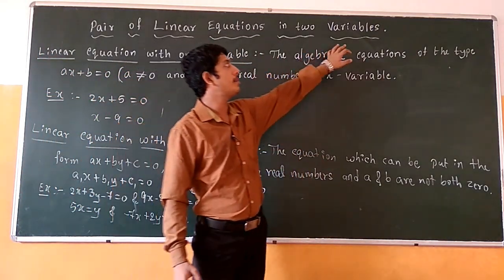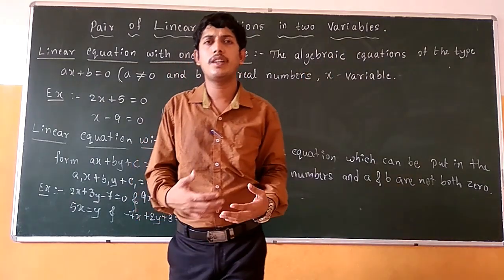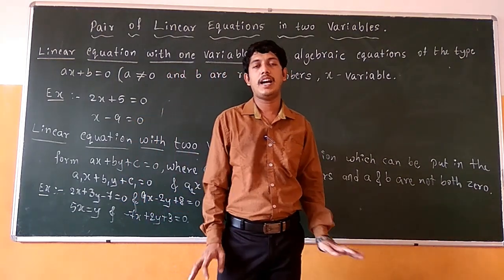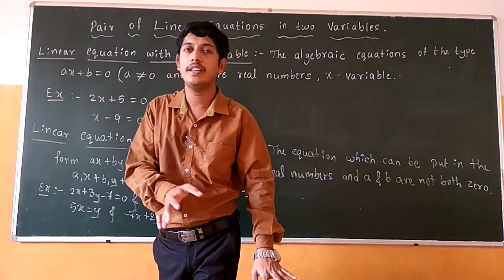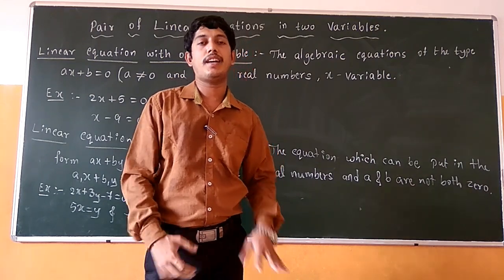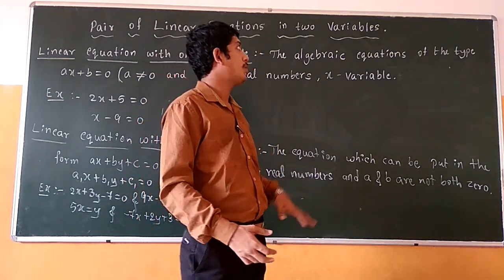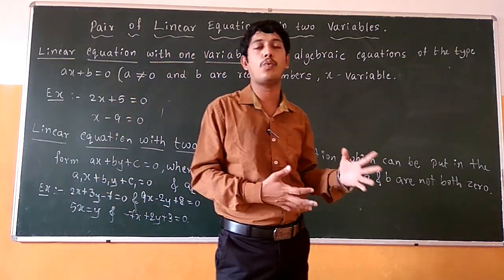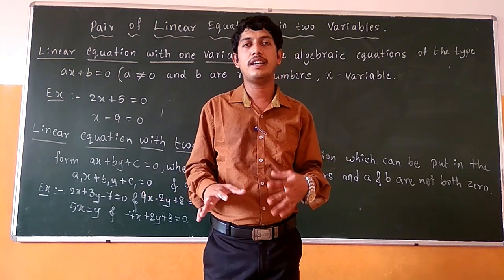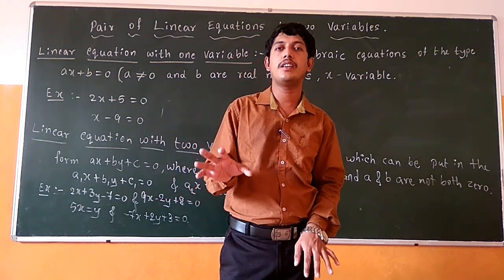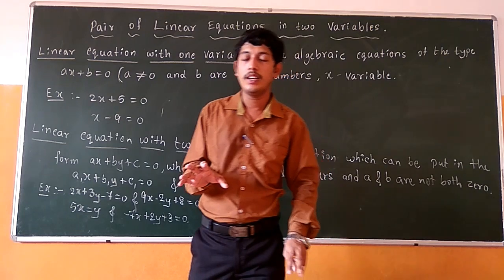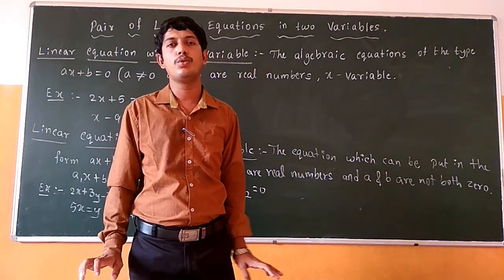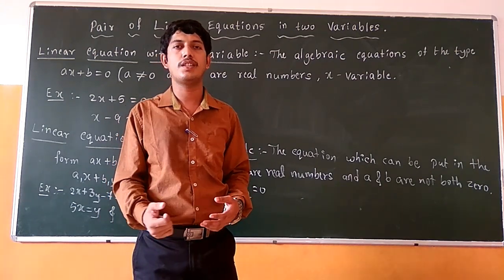Another term is variable. We learnt about monomial and binomial terms. Monomial means the term which is having a single term, and binomial means the term which is having two terms. Variable means terms like x, y, or z — the variable means the terms in which its value does not remain same throughout the solution of the equation.